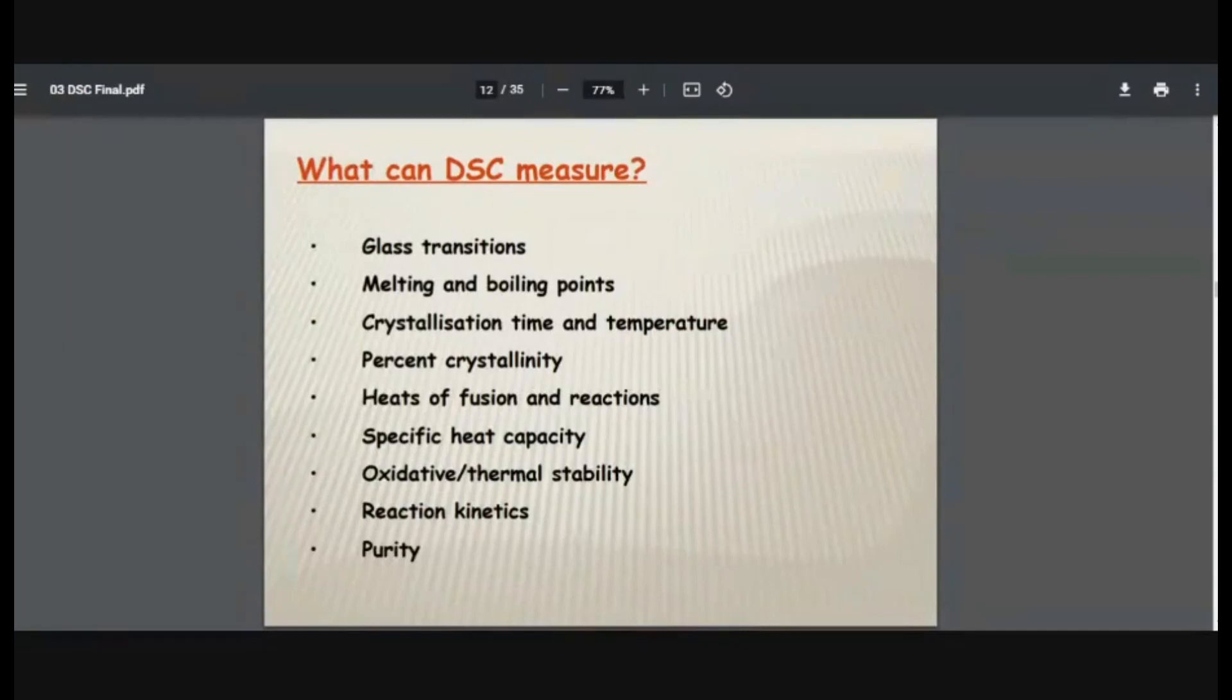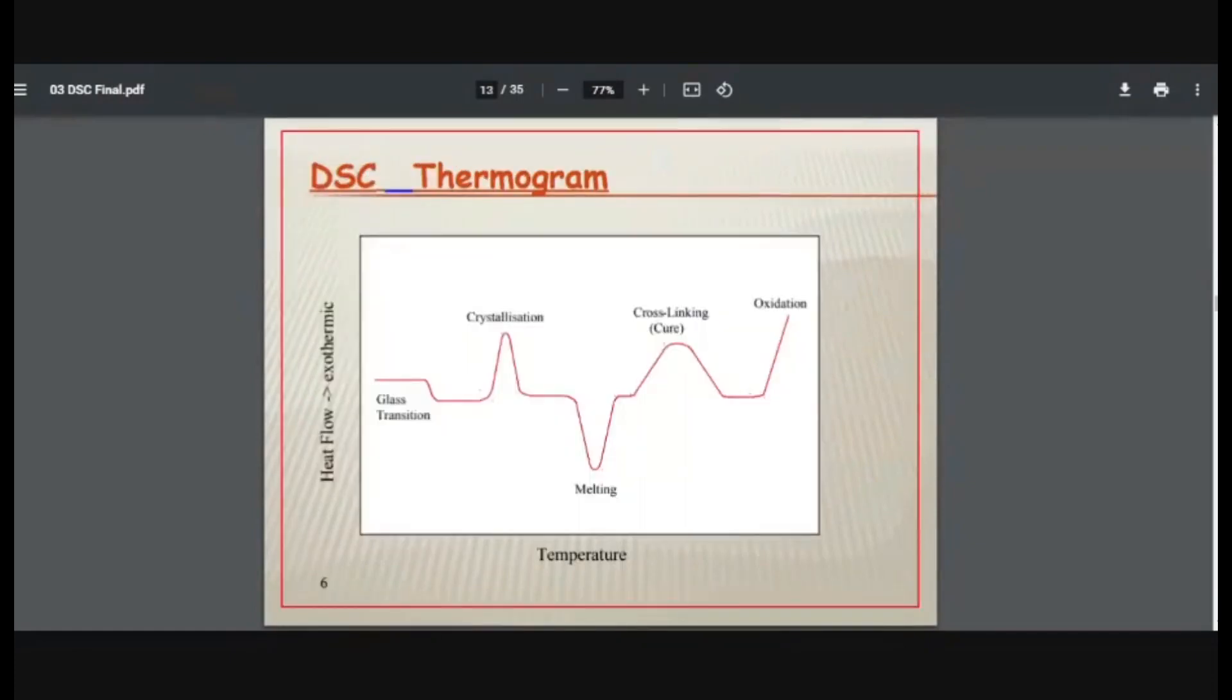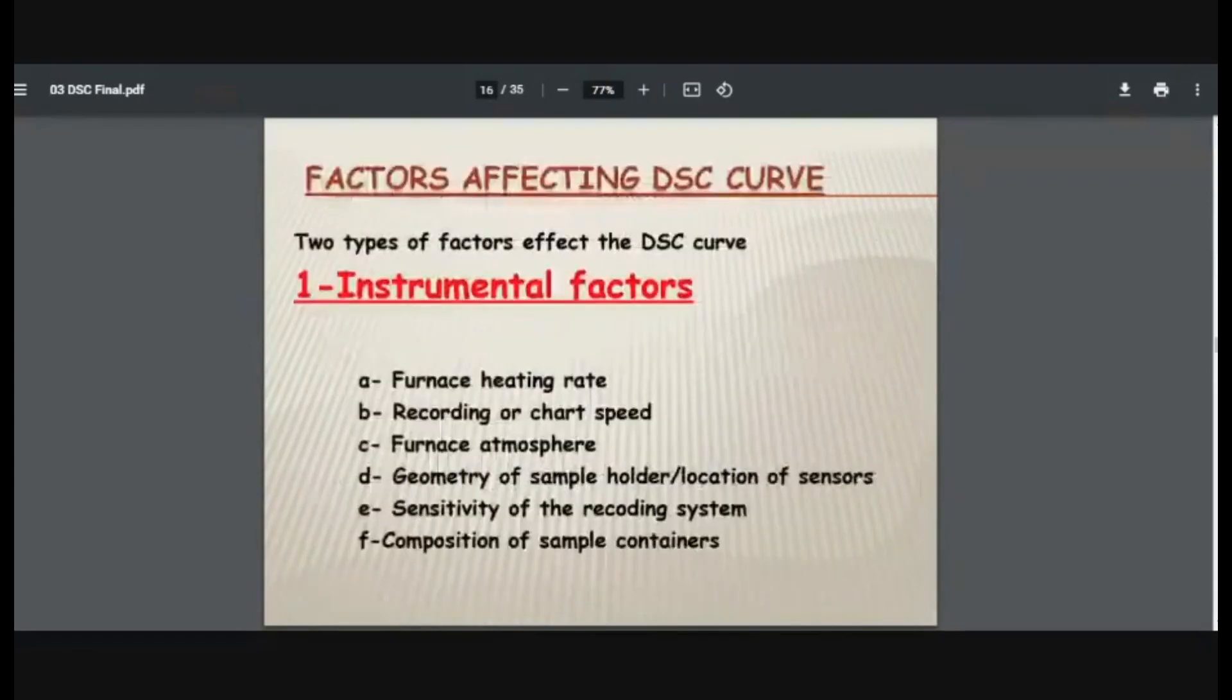Application. What can DSC measure? First, glass transition. Then melting and boiling points. Then crystallization time and crystallization temperature. Percent crystallinity. Heat of fusion and reaction. Specific heat capacity. Oxidative and thermal stability. Reaction kinetics - that is rate of reaction, time of reaction, all that. And purity. So a typical DSC thermogram looks like this. If it is a glass transition, it is a slight decrease in the temperature, or you can say endothermic process. Then for crystallization, when crystallization happens, exothermic reaction - sharp. Then for melting again, endothermic. If there is cross-linking polymer changes, it is again exothermic. And oxidation again, exothermic. Let us not go in this deep.